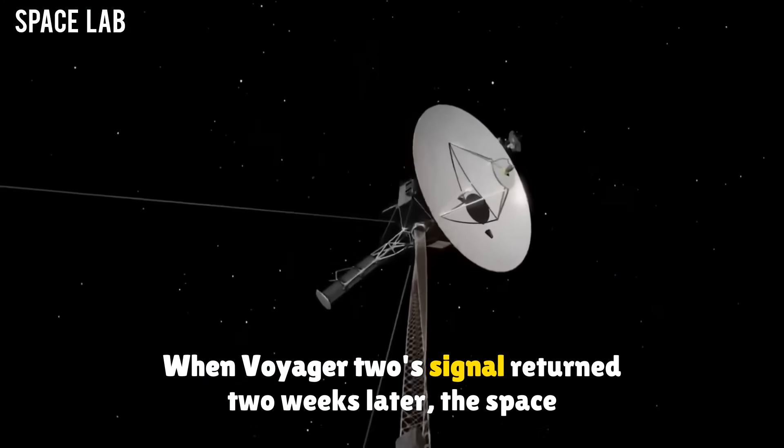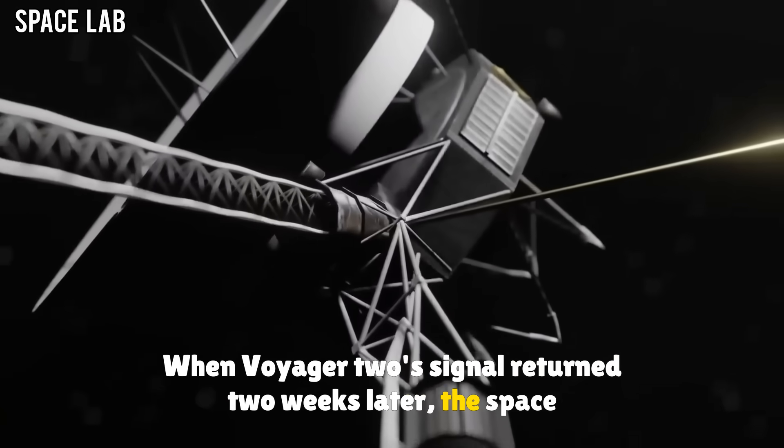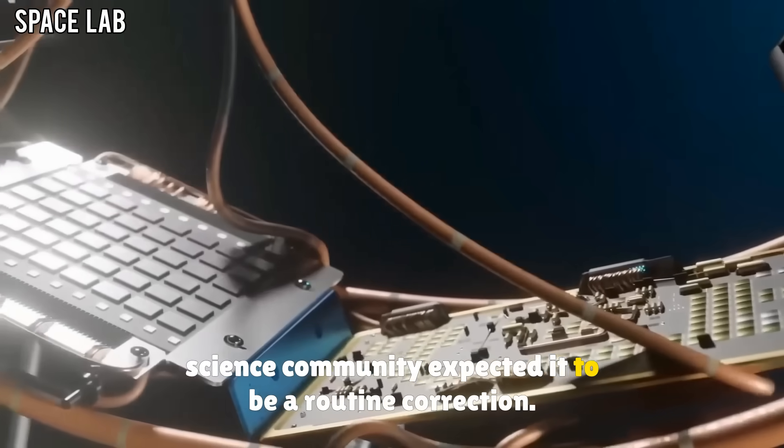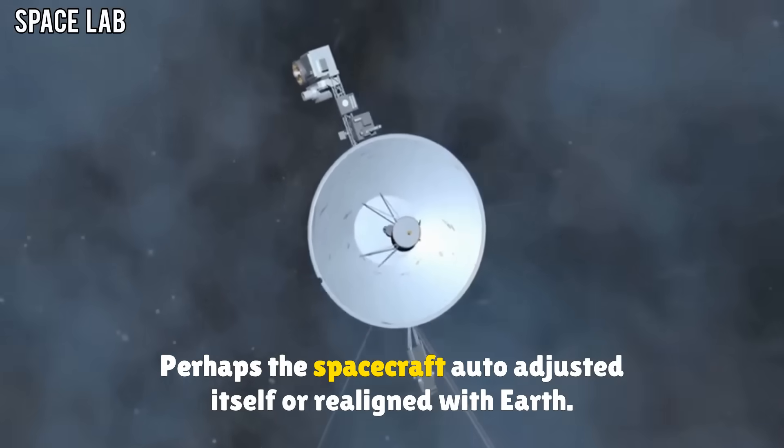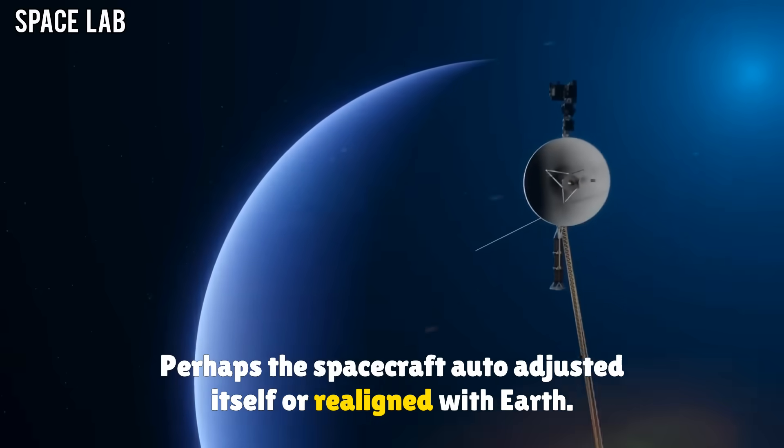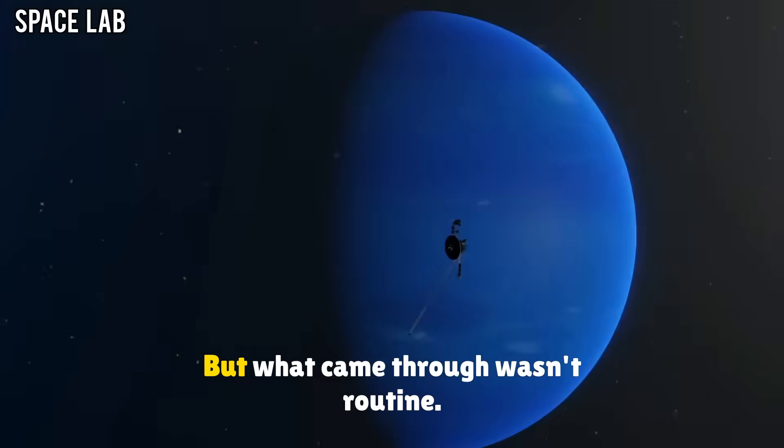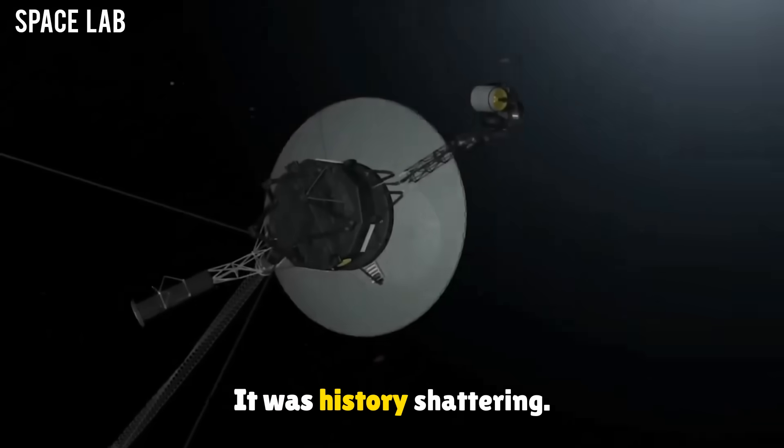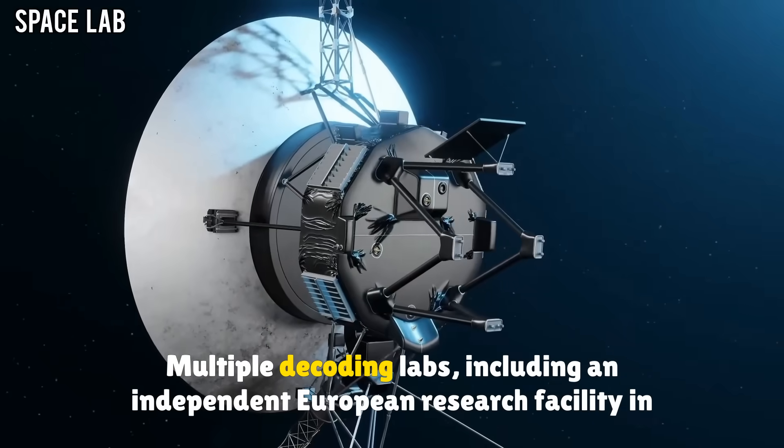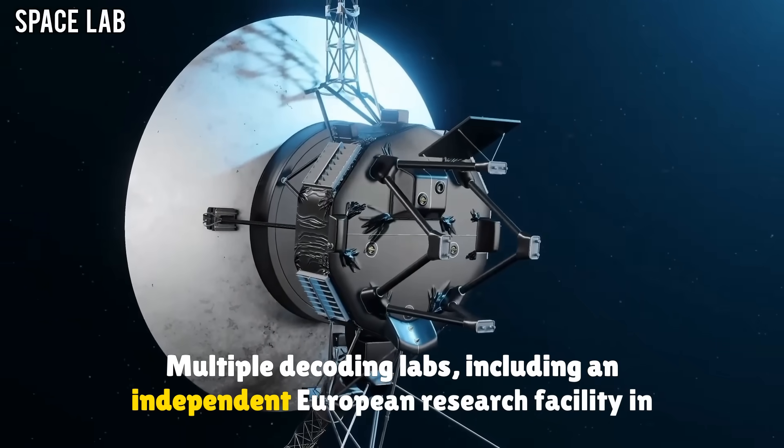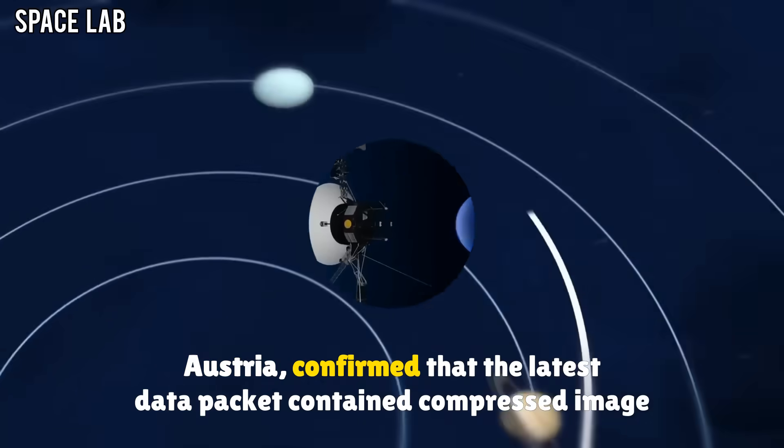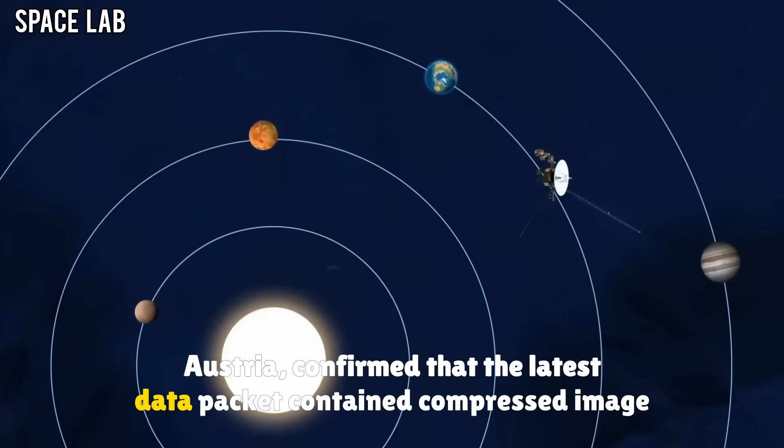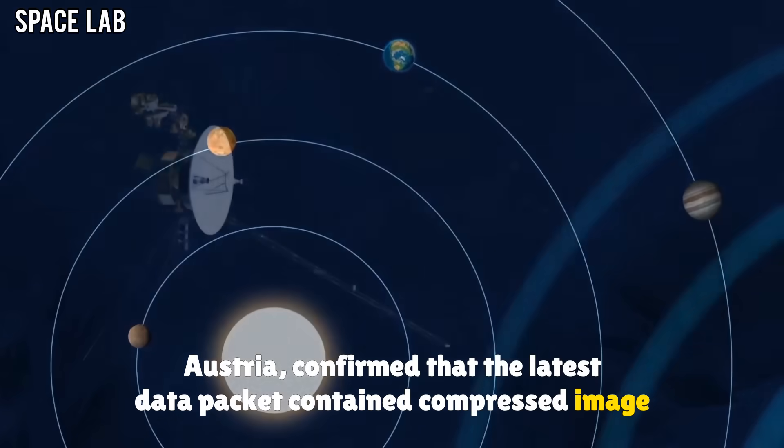When Voyager 2's signal returned two weeks later, the space science community expected it to be a routine correction. Perhaps the spacecraft auto-adjusted itself or realigned with Earth. But what came through wasn't routine. It was history-shattering. Multiple decoding labs, including an independent European research facility in Austria, confirmed that the latest data packet contained compressed image files.